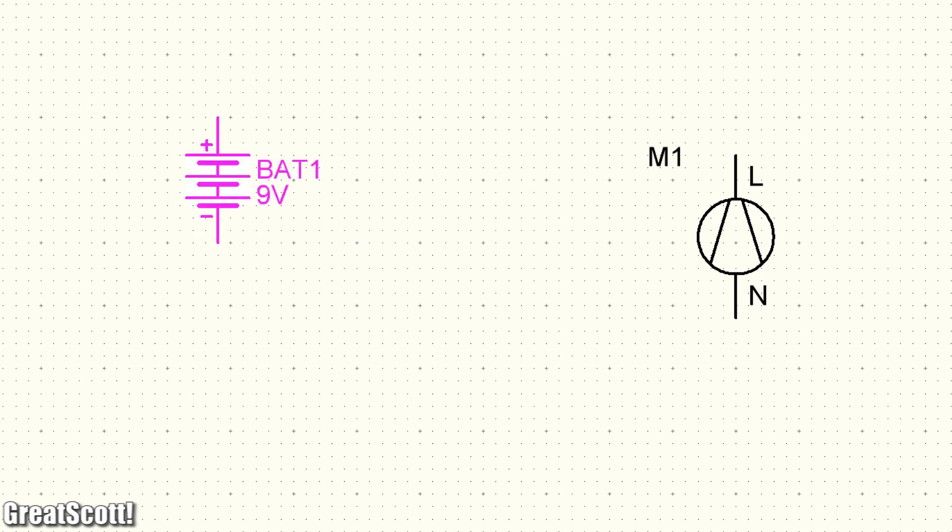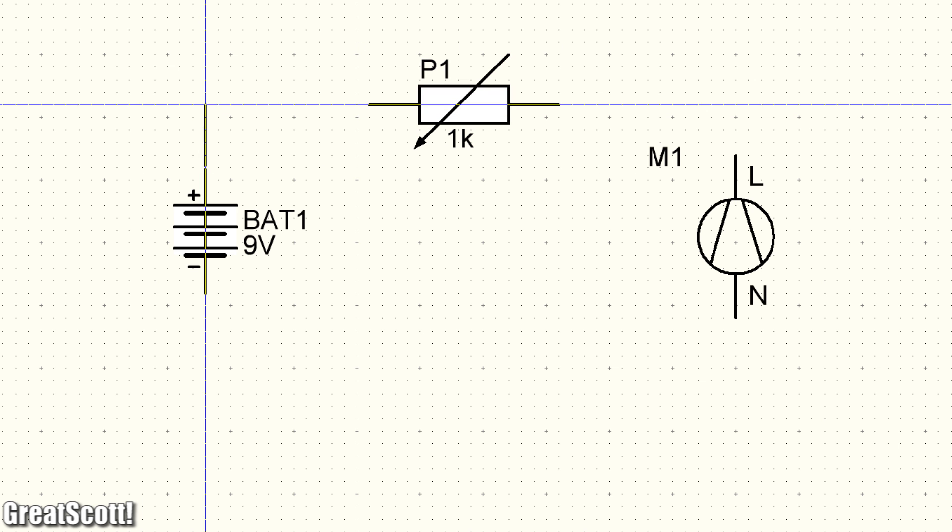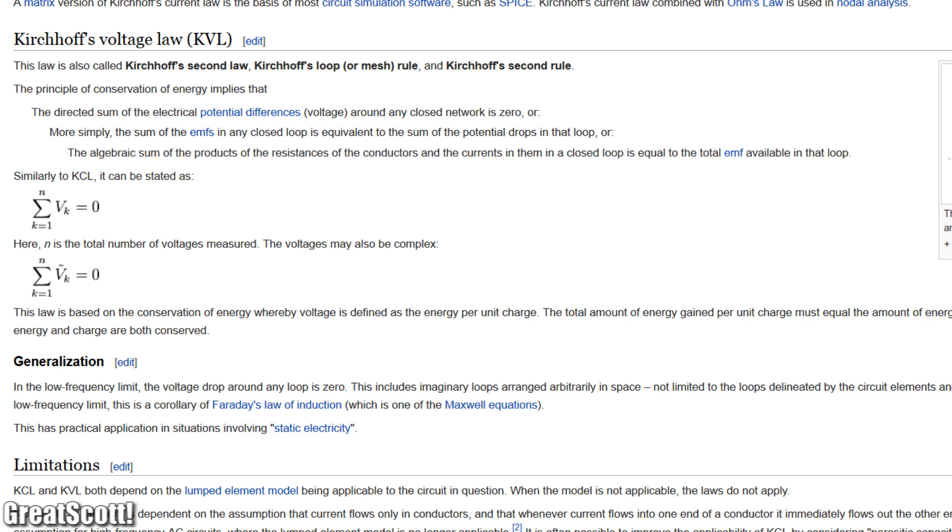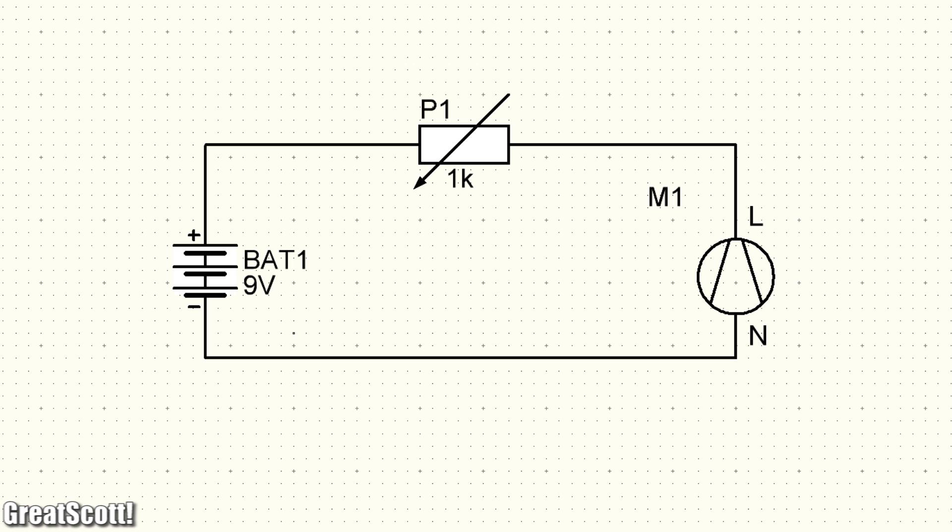The simplified schematic for the potentiometer looks like this. A fixed 9 volt source, a resistor and a fan. Let's do the math for the second line here. I want an 8.5 volt drop across my fan. Kirchhoff's voltage law tells us that the voltage sum in a closed network must be 0. So we have a 0.5 volt drop across the resistor.